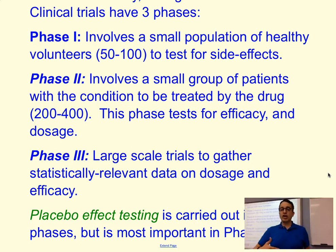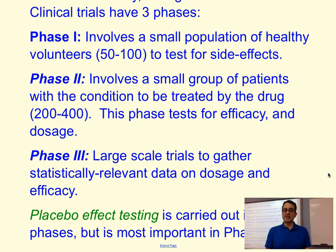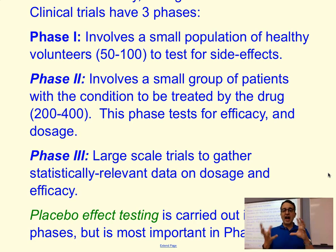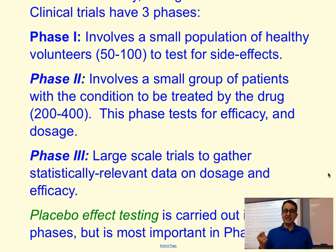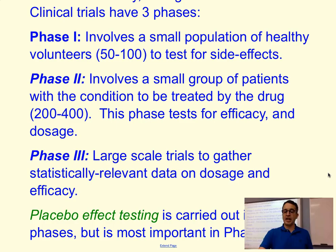Phase three involves a much larger group — multiple hundreds of people, sometimes even one or two thousand — in order to get statistically relevant data on dosage and efficacy. We include more age groups, genders, and ethnicities, all of which may affect how well the drug works. Through all three phases we also test the placebo effect, though the most important placebo testing is done in phase three because of the larger population.